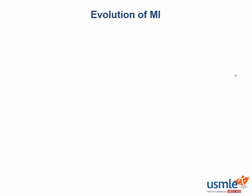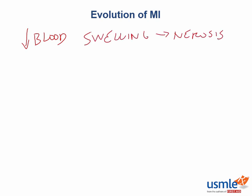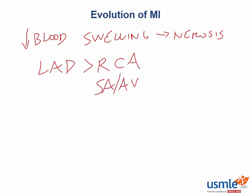This is an entire page in your first aid book, so take a sip of that coffee and focus back in as we beast mode this content. We are perfectly aware that myocardial infarctions occur when there is a decrease in blood flow so severe that we quickly progress from myocyte swelling to necrosis. We are particularly concerned about the left anterior descending coronary artery, which has to cover the most territory, followed by the right coronary artery, which is very important in supplying the SA and AV nodes.